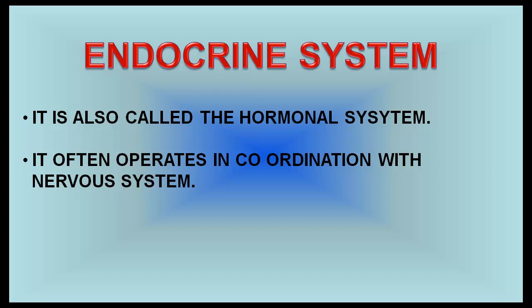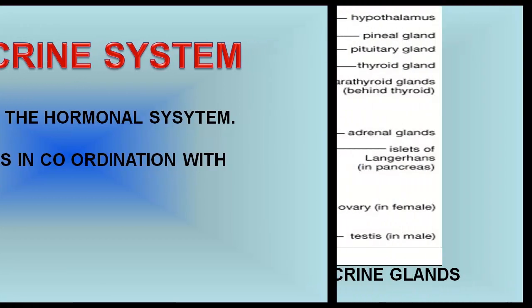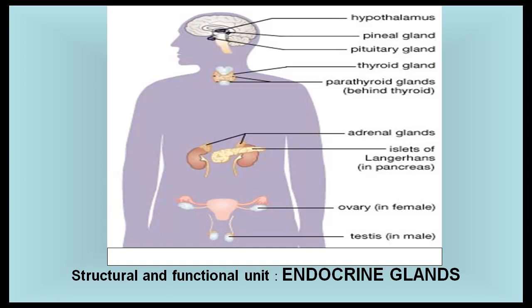It is also called the hormonal system. It often operates in coordination with the nervous system. The endocrine system is a system of isolated, ductless glands that pour their secretion directly into the circulatory system for passage to different targets in order to control their metabolism, growth, differentiation, and activity. The structural and functional units of this system are endocrine glands.